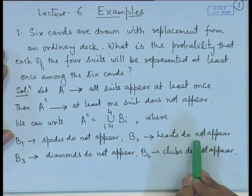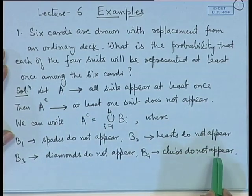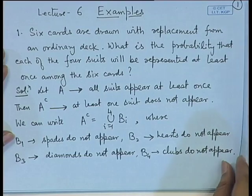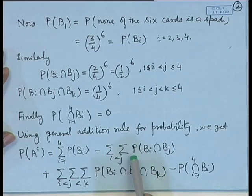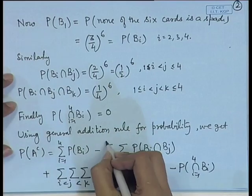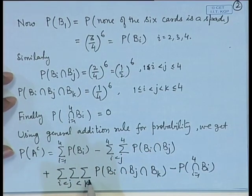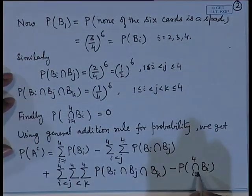Instead, we represent A complement as the union of B_i for i = 1 to 4, where B_1 = spades do not appear, B_2 = hearts do not appear, B_3 = diamonds do not appear, and B_4 = clubs do not appear. By the addition rule, P(A^c) = Σ P(B_i) − Σ P(B_i ∩ B_j) + Σ P(B_i ∩ B_j ∩ B_k) − P(B_1 ∩ B_2 ∩ B_3 ∩ B_4), where the sums run over i < j < k up to 4.